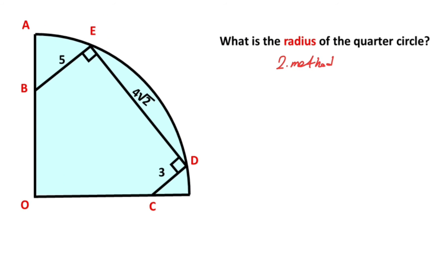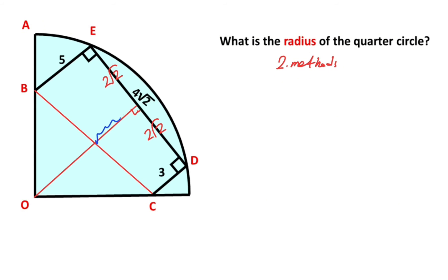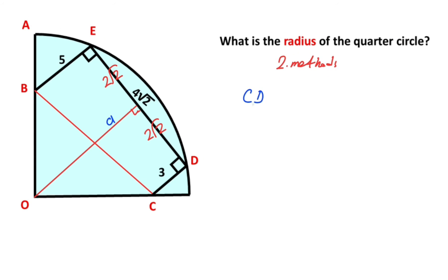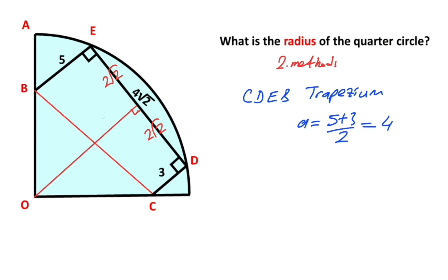Now we will calculate the value of the radius using a second method. Let's draw one perpendicular line again — these two parts must each be equal to √2. If we connect point B and point C, let's call this length A. Notice this is a trapezium: C, D, E, B is a trapezium. Therefore A = (5 + 3) / 2, so A equals 4 units.